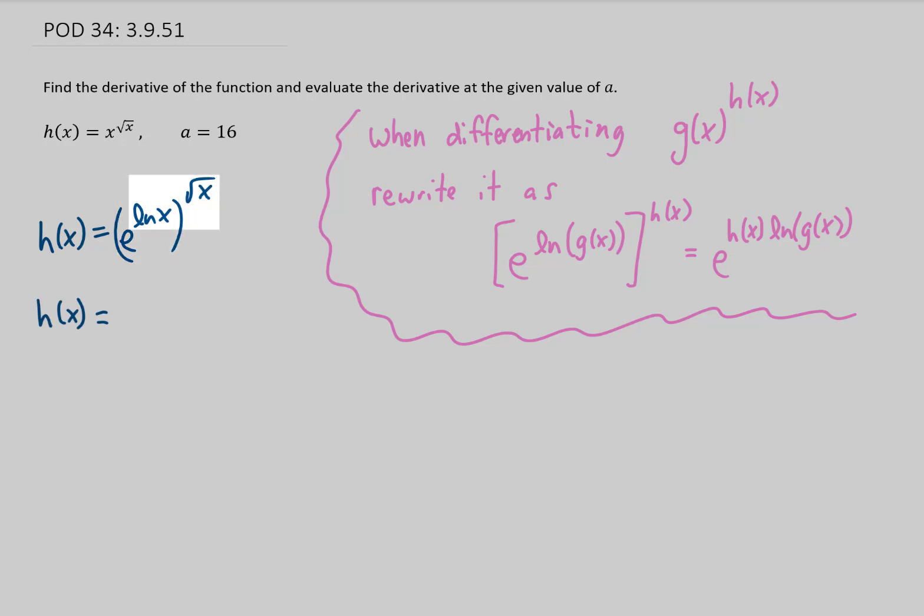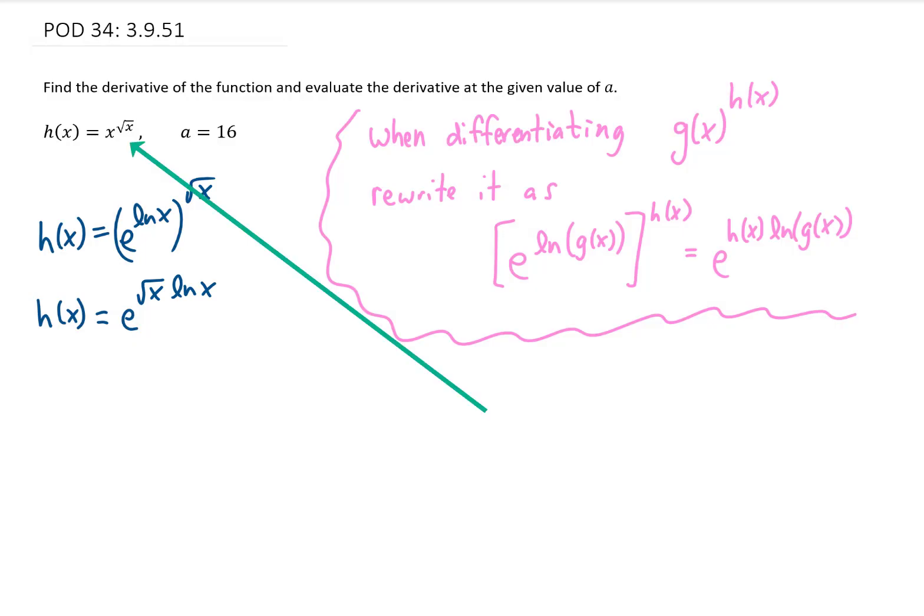We have an exponent on another exponent, meaning we can multiply those two exponents. And now we've rewritten our original h of x just using algebra in this new form here. And the idea here is that we know how to differentiate this form of the function.